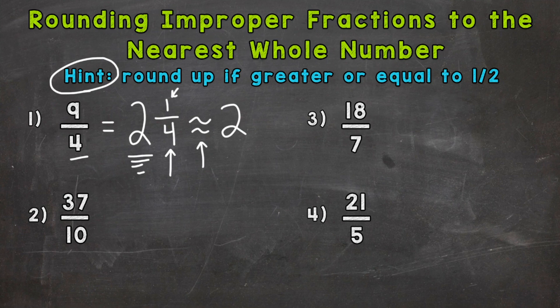So let's move to number 2, where we have 37 tenths. First thing we do, convert to a mixed number. So we divide 37 divided by 10. How many whole groups of 10 out of 37? Well, 3. That gets us to 30, so we have 7 left over, and we keep our denominator of 10 the same. So now we're ready to round.